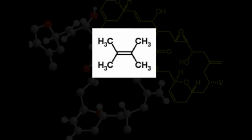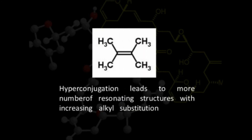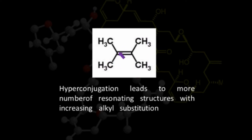In the case of tetrasubstituted alkenes, all hydrogen atoms have been replaced by methyl groups. Three carbon-hydrogen bonds are present adjacent to the carbon-carbon pi bond on one side, and three more carbon-hydrogen bonds are present on the other side, giving a total of 12 carbon-hydrogen sigma bonds at the alpha position with respect to the carbon-carbon double bond. These all enter into resonance with the system.